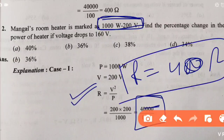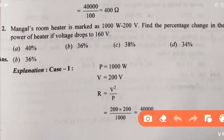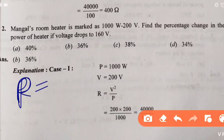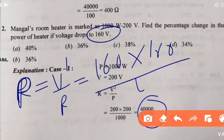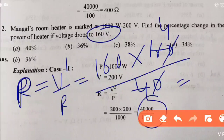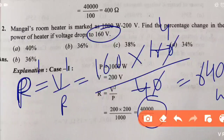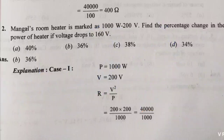Second part: voltage drops to 160 V. New power P' = V'² / R = 160 × 160 / 40. The zeros cancel, giving P' = 640 W. Now we have P' = 640 W and original P = 1000 W, so we can find the percentage change in power.